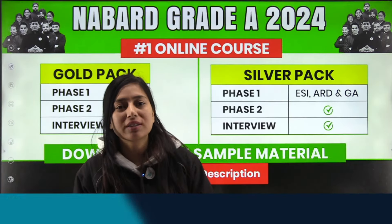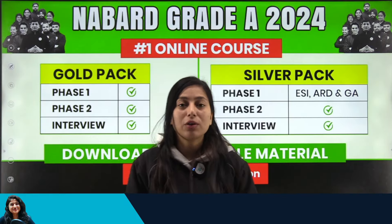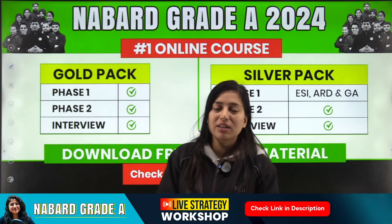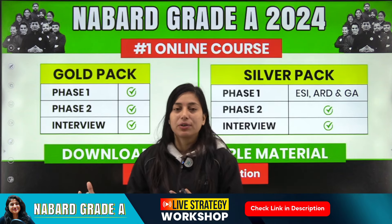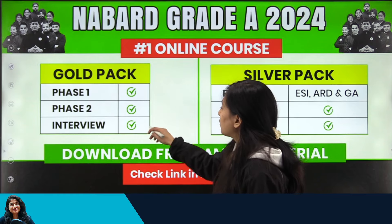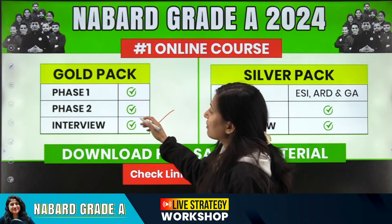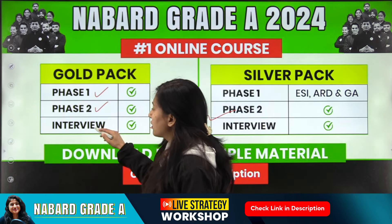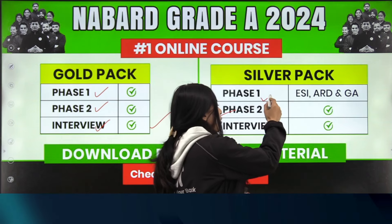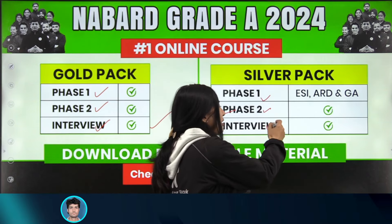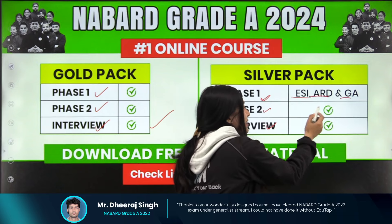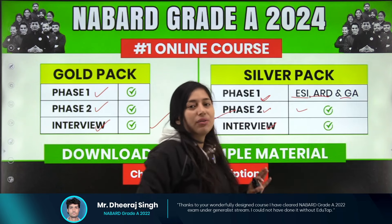That was all for this video. I hope now you have the clarity on how to decode the syllabus yourself and analyze PYQs. Regarding our courses, we have a Gold Pack and a Silver Pack. The Gold Pack provides content for Phase 1, Phase 2, and interview. The Silver Pack provides content for Phase 2 and interview, with Phase 1 preparation for ESI, ARD, and GA integrated into Phase 2 preparation.